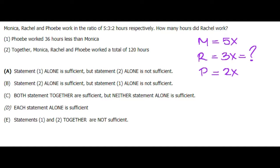Data one says that Phoebe worked 36 hours less than Monica. That means 2x equals 5x minus 36, and that means 3x equals 36, so x is 12. And that is sufficient to answer the question.